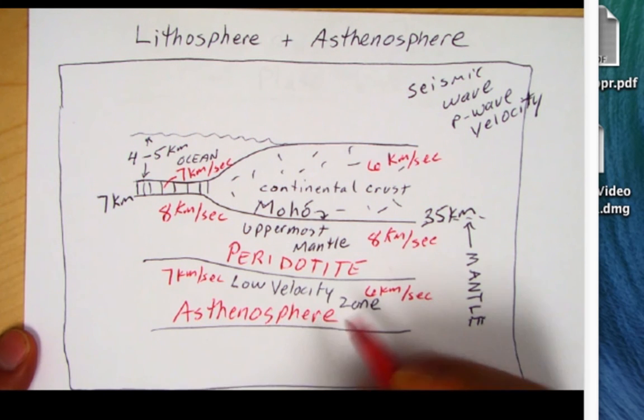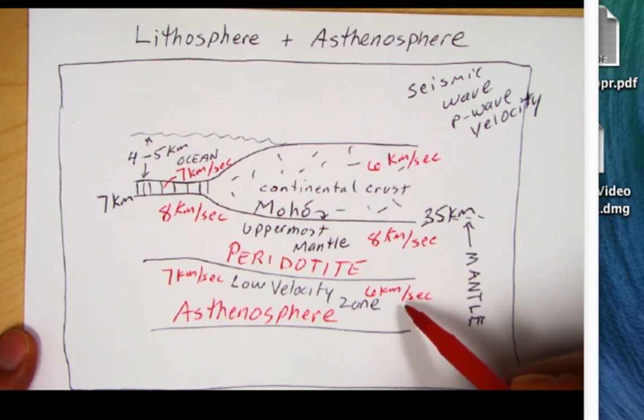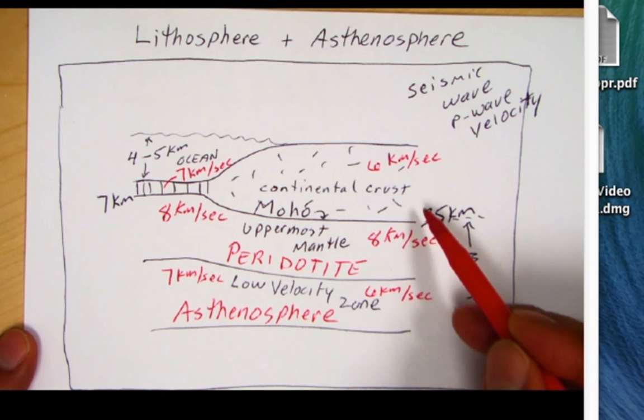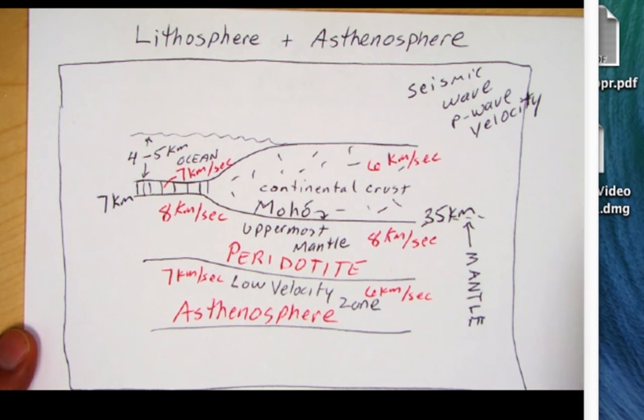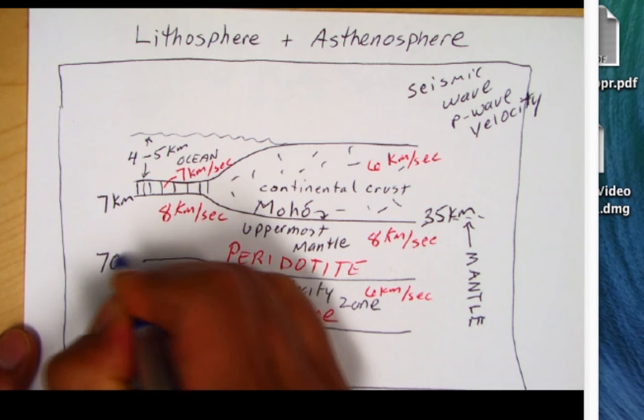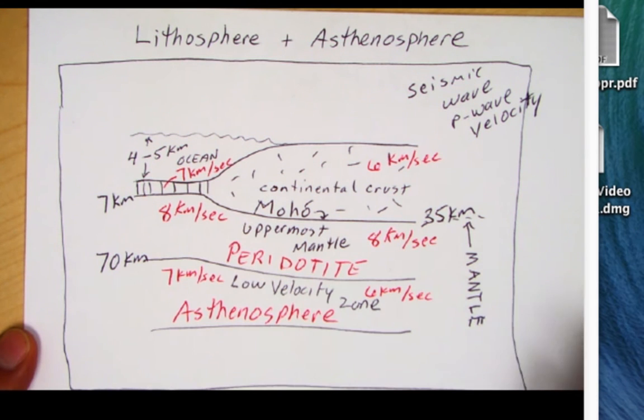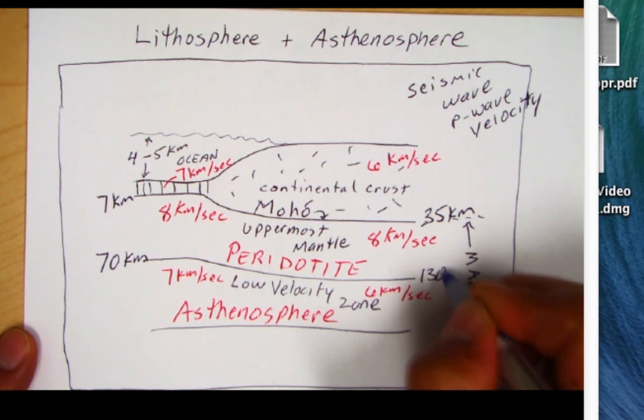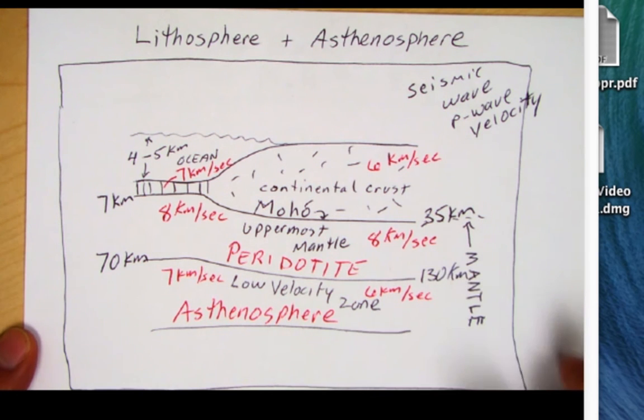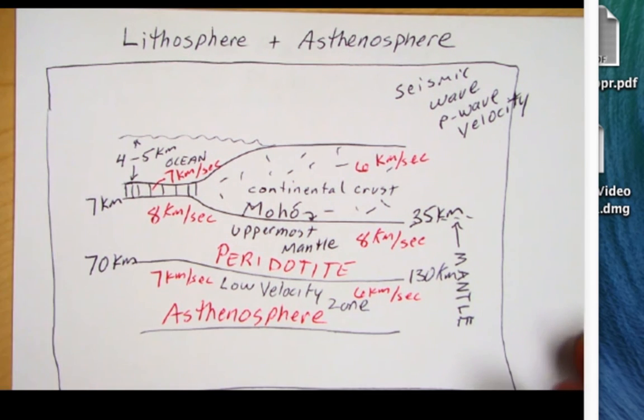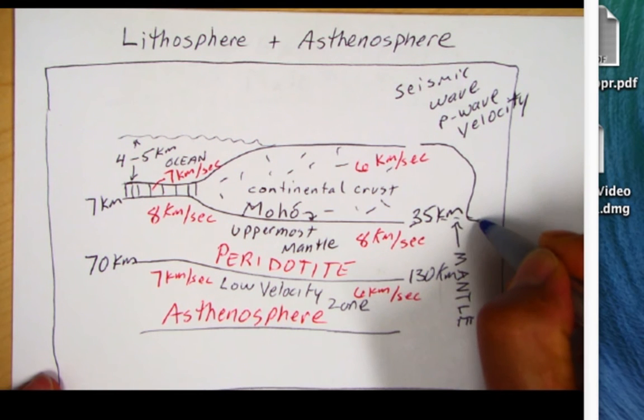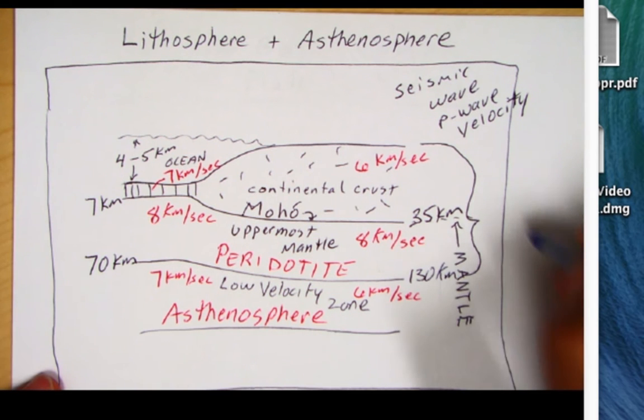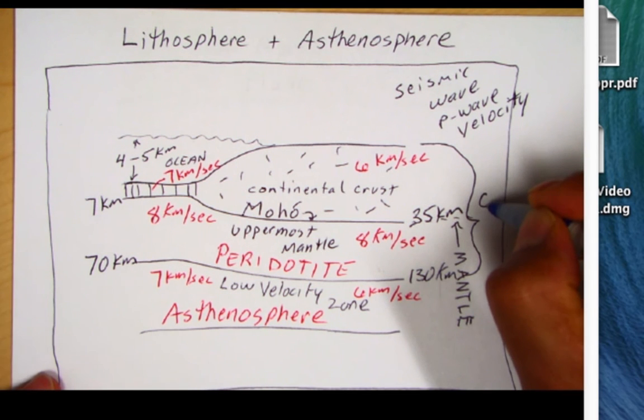Note that this asthenosphere lies directly under the mantle lithosphere and the continental crust. And where this velocity change occurs under ocean basins, it's about 70 kilometers down. Under continental crust, it's about 130 kilometers down. And that gives us an important window. We've discovered something here. If we look at the thickness of this crust plus the uppermost mantle, this is what we call continental lithosphere.